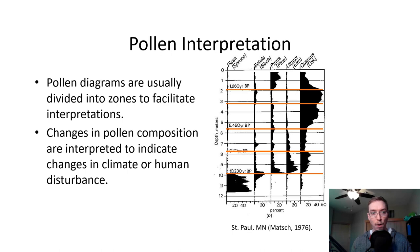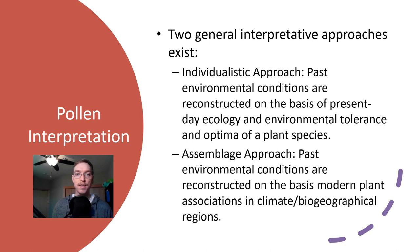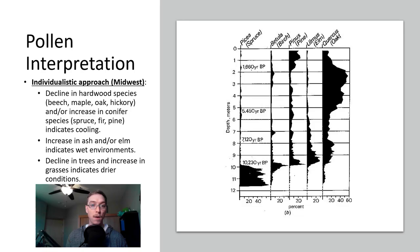Two general interpretive approaches exist: the individualistic approach where past climate conditions are reconstructed on the basis of present-day ecology and environmental tolerance and optima of plant species, or the assemblage approach where past environmental conditions are reconstructed on the basis of modern plant associations in climate and biogeographical regions. The individualistic approach is what we do in the Midwest a lot of times. We see a decline in hardwood species like beech, maple, oak, hickory, and/or an increase in conifer species like spruce, fir, or pine. That typically indicates cooling, colder climates during glaciation or the last glacial maximum. Then we see this influx of hardwood species until we get to where oak predominated in the mid to late Holocene. Increases in ash and elm trees indicate wet environments prevailing. Decline in trees and an increase in grasses indicates drier, more arid climate conditions.